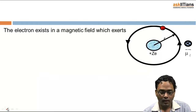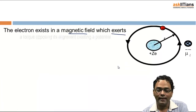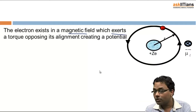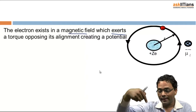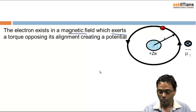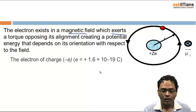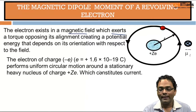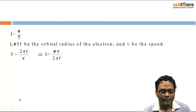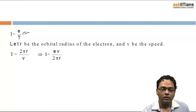The magnetic dipole moment points from the magnetic south to the magnetic north pole. The electron exists in a magnetic field which exerts a torque on it, since the force changes direction at every instant and the radius is perpendicular to the force. The current produced is given by i = e over T, where e is the charge of the electron.